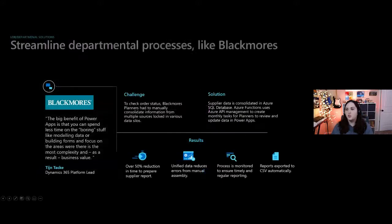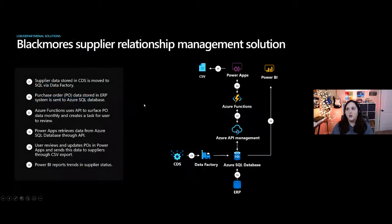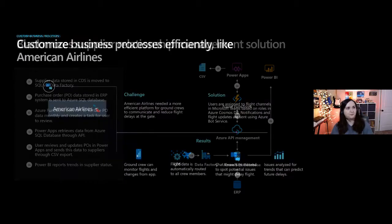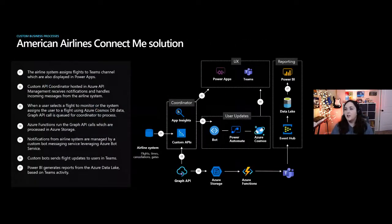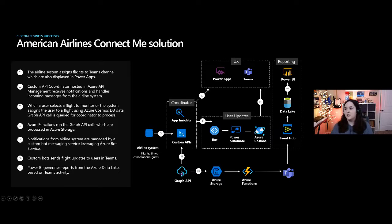Looking at Blackmore's — they're getting data from CSV files and integrating with Power BI, Azure API Management, Data Factory, and their ERP system. And American Airlines — their contact-me solution is pretty intense. They're using rich reporting with Power BI and Azure Data Lake, Event Hubs, and Teams integration. They're using Graph API calls, custom APIs, App Insights, and pushing everything through Power Apps and Teams for their user experience. Just lots of great use cases there.